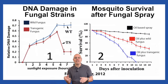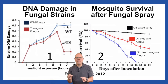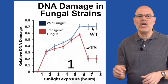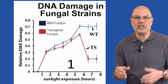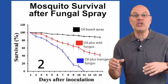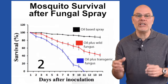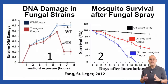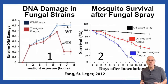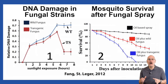The problem was that the fungus itself was killed by exposure to ultraviolet light from the sun. So the researchers first had to genetically engineer the fungus so that it could survive in ultraviolet light. Graph 1 shows the amount of DNA damage in the wild-type fungus (WT) compared to the genetically-engineered transgenic strain (TS). Graph 2 shows the percentage of surviving mosquitoes after they were exposed to an oil-based spray, a spray containing the wild-type fungus, and a spray containing the genetically-engineered fungus. You might be asked to identify the control group in Graph 2, explain the differences in results from the three treatments, and connect what's going on in Graph 1 to the results in Graph 2.